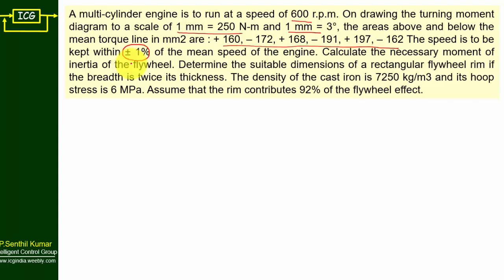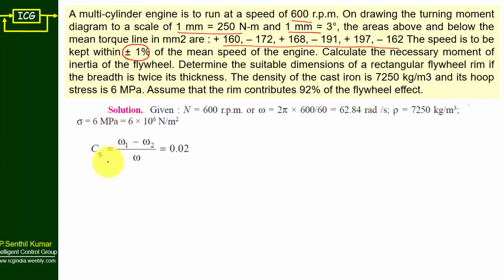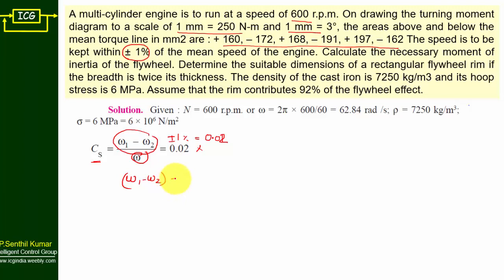From that we can calculate the CS value. The fluctuation of speed, omega1 minus omega2, equals plus or minus 1 percentage. Plus 1 minus 1 gives us 0.02, so CS equals 0.02. The fluctuation of speed equal to plus or minus 1% means 0.02 times omega — that is the meaning of the term.